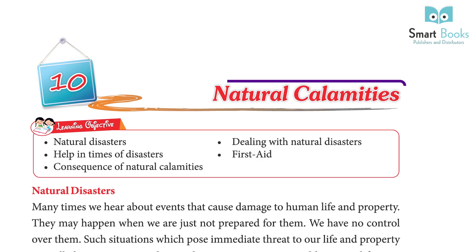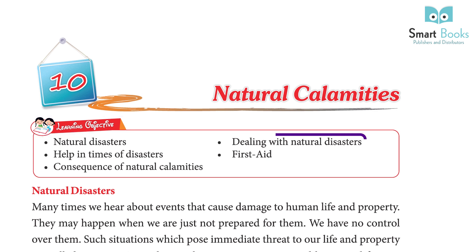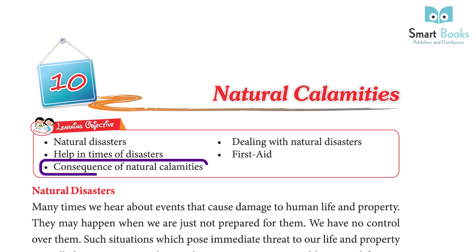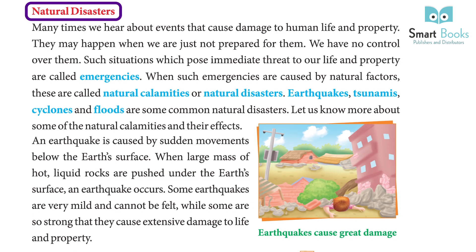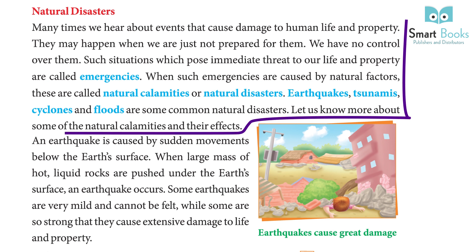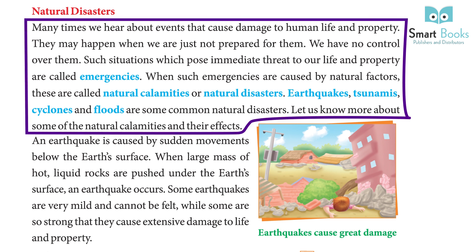Chapter 10: Natural Calamities. Learning objectives include: Natural Disasters, Dealing with Natural Disasters, Help in Times of Disasters, First Aid, and Consequences of Natural Calamities. Many times we hear about events that cause damage to human life and property. They may happen when we are just not prepared for them, and we have no control over them. Such situations which pose immediate threat to our life and property are called emergencies. When such emergencies are caused by natural factors, these are called natural calamities or natural disasters.